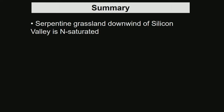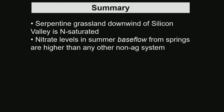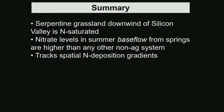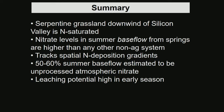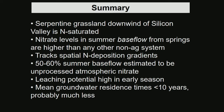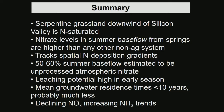In summary: the serpentine grassland is totally nitrogen saturated. The nitrate levels in the summer base flow from springs are higher than any other non-agricultural system I've been able to find. It does track spatial nitrogen deposition gradients. 50 to 60 percent of the summer base flow is estimated to be unprocessed atmospheric nitrate flushing right through the system. Mean groundwater residence times are less than 10 years, probably much less. We have declining NOx and increasing NH3 trends.